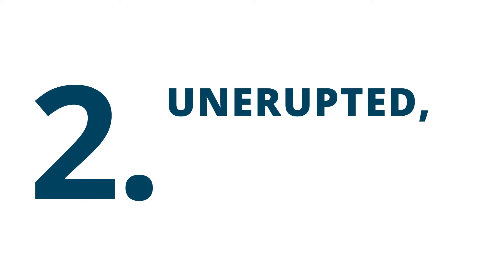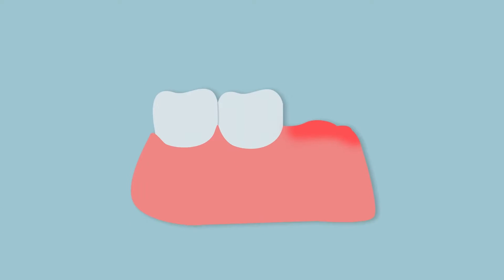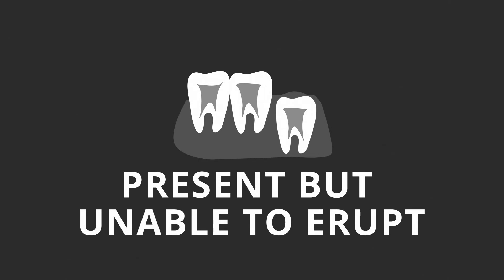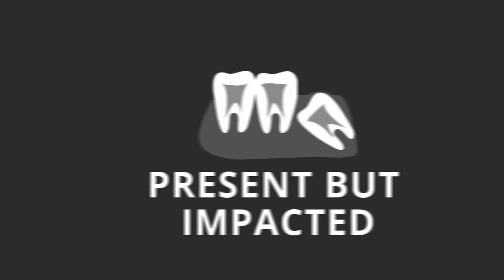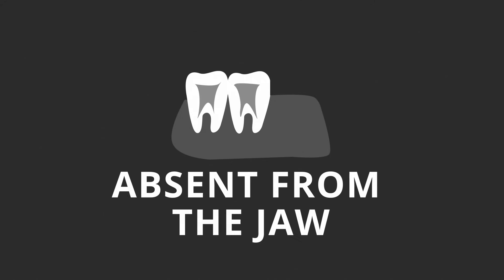Number two: unerupted, impacted, and missing teeth. Dental x-rays are useful in finding teeth that do not appear inside the mouth when they should. When someone is missing a tooth, it is important to determine whether that tooth is present but unable to erupt, present but impacted in the wrong position, or completely absent from the jaw.